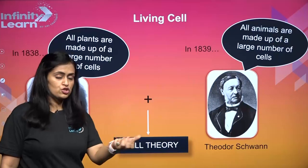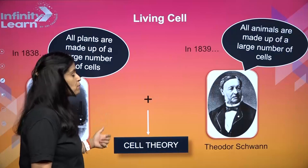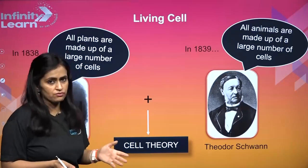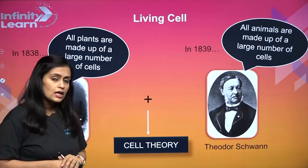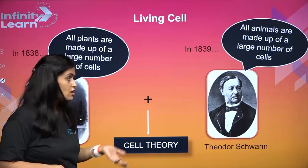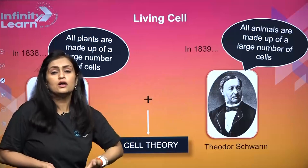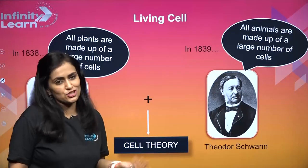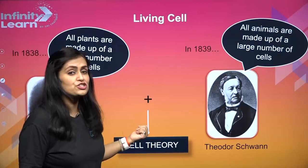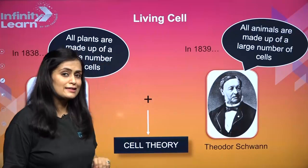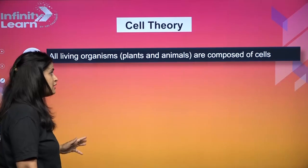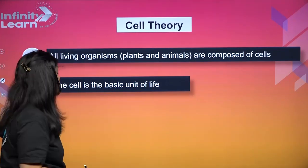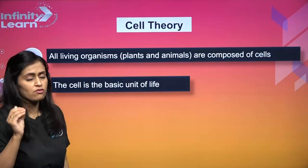Once the cell theory was put together by Schwann and Schleiden, they proposed it to the natural science community. Back then there was no separate physics, chemistry, biology - they all fell under natural science. The committee said you're right, but can you tell us - so many cells are making plants and so many cells are making animals, so from where are all these cells coming? In 1839, they gave two significant findings: one, all living organisms - plants and animals - are composed of cells; two, cells are the basic unit of life.